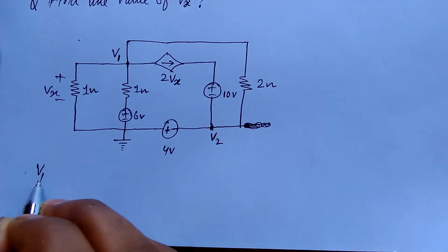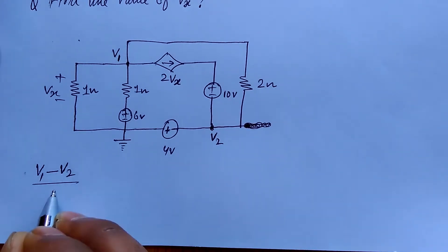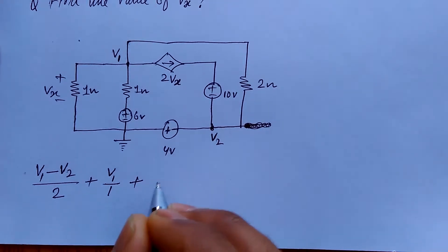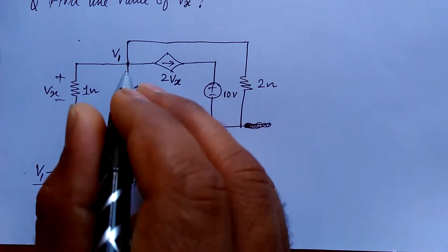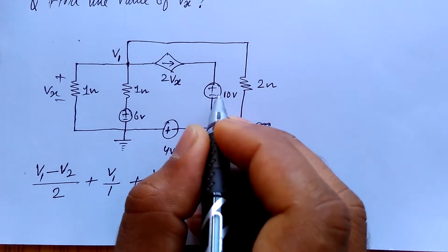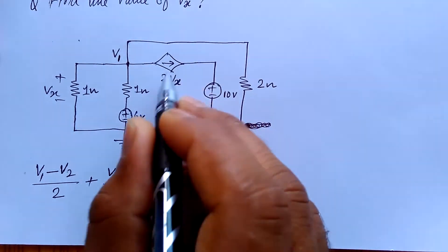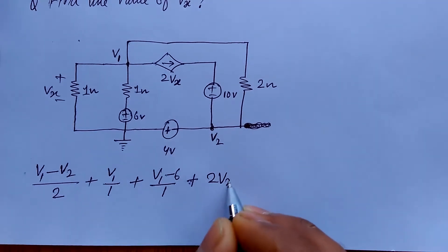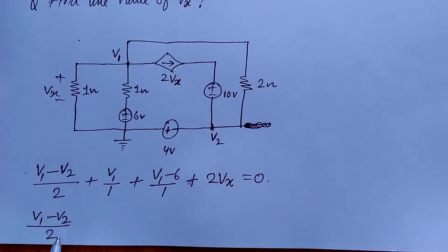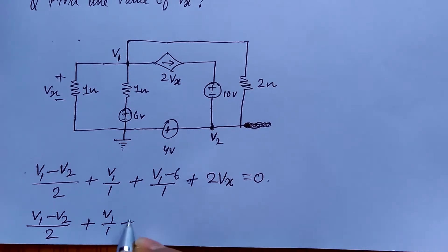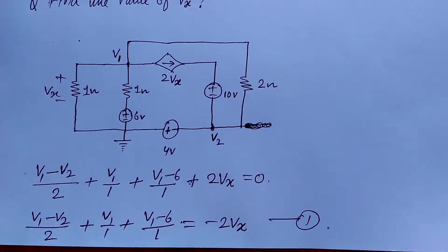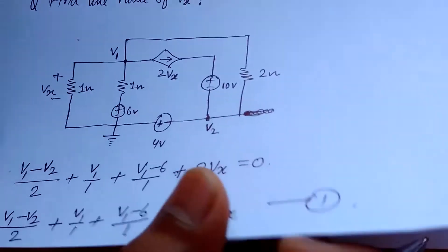The equation at node 1 will be: (V1 minus V2) divided by 2, plus V1 divided by 1, plus (V1 minus 6) divided by 1, plus 2Vx, because it's a current direction. By node analysis, if there is a resistance then (V1 minus something) over resistance applies, but here it is already given as a current direction, so there will be plus 2Vx equal to 0.